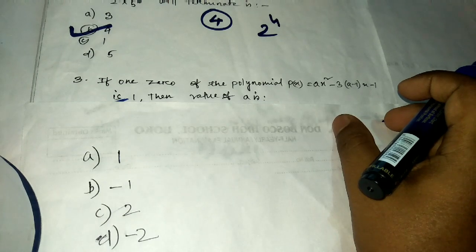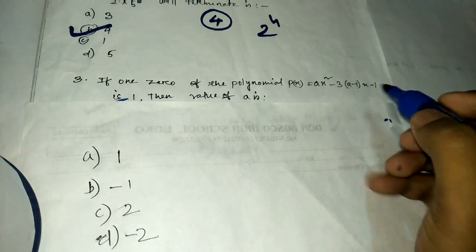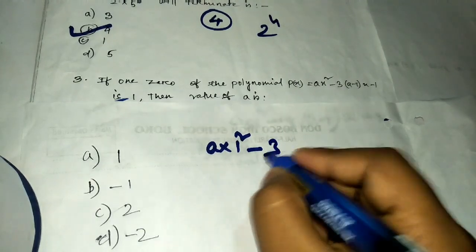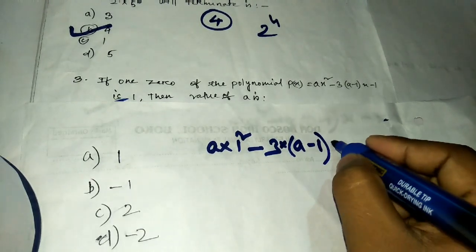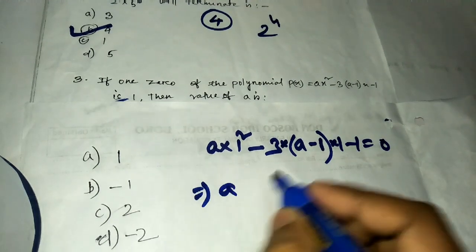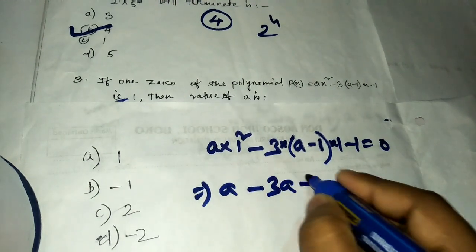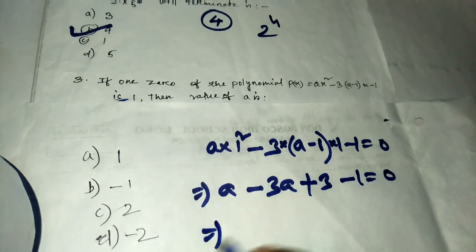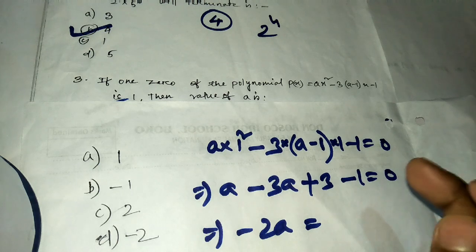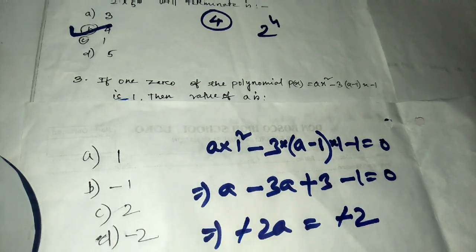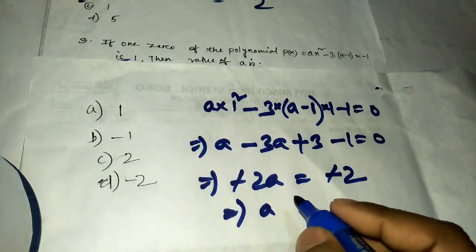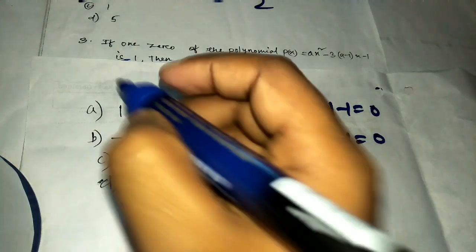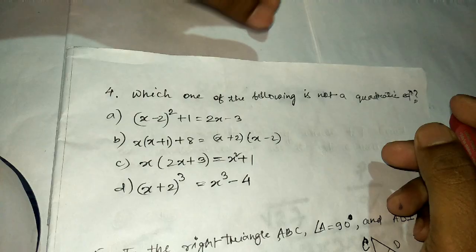Question number three: if 1 is a zero of the polynomial, find the value of a. Substitute x = 1 to get remainder 0: a(1)² − 3(a − 1)(1) − 1 = 0, giving a − 3a + 3 − 1 = 0, so −2a + 2 = 0, therefore a = 1.